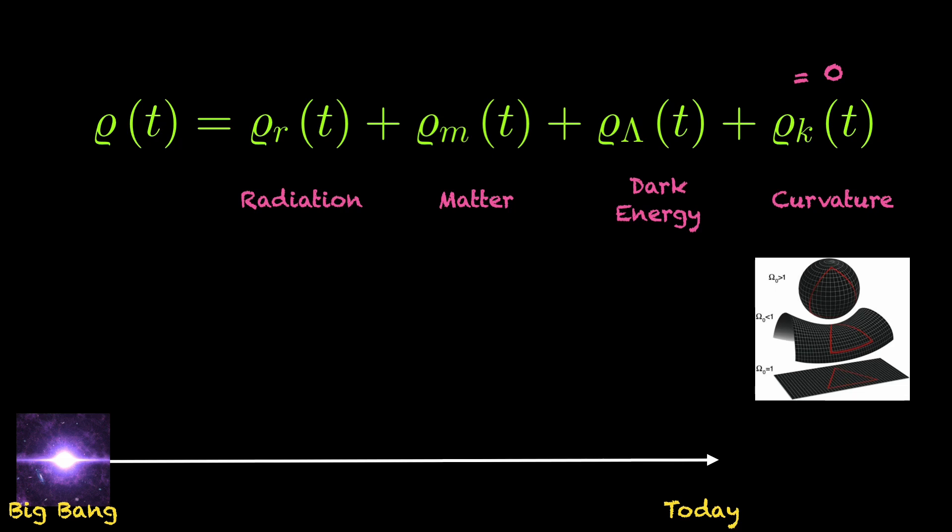There was a time, indeed, when this density has been really high. To be more precise, in the first 47,000 years after the Big Bang, it was radiation which dominated the universe, and its energy density was much larger than that of matter or dark energy.